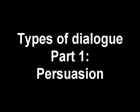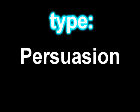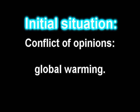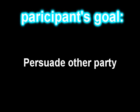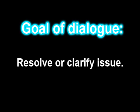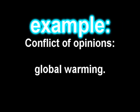Types of Dialogue, Part 1: Persuasion. The type of dialogue we're going to focus on in this video is persuasion, or persuasionary dialogue. The initial situation that brings about the need for a persuasionary dialogue is a conflict of opinions. The goal of the participants is to attempt to persuade the other party. The goal of the dialogue is to resolve or clarify the issue.